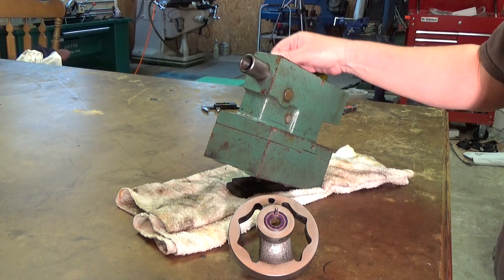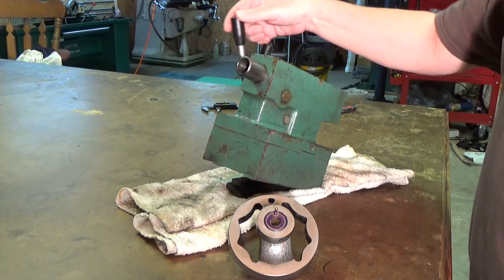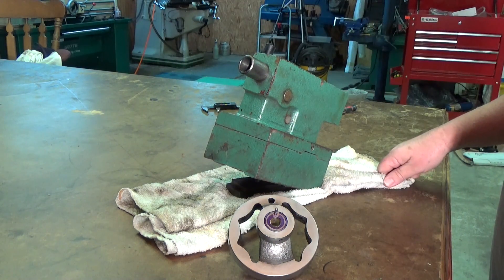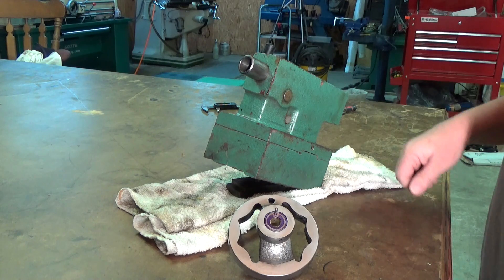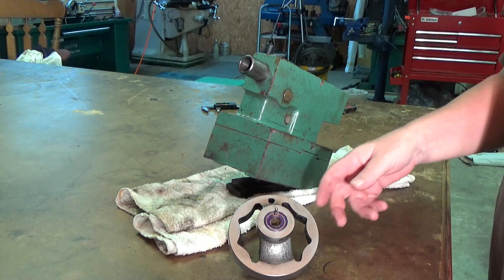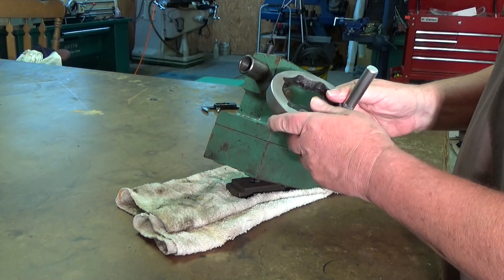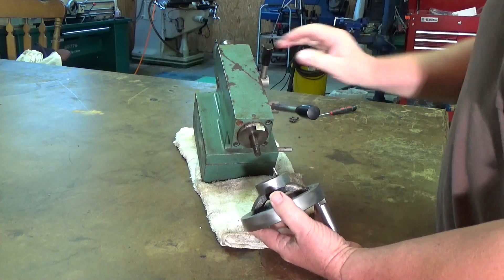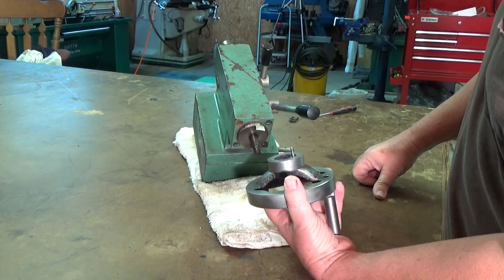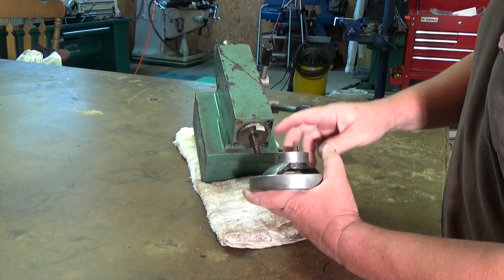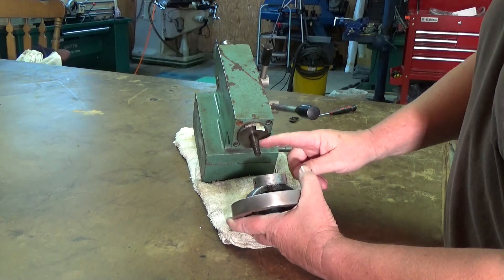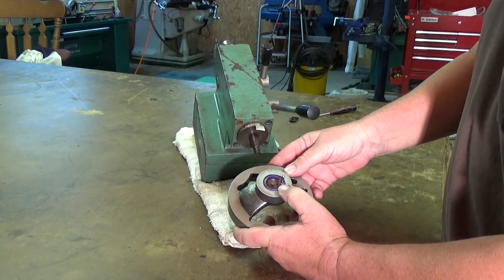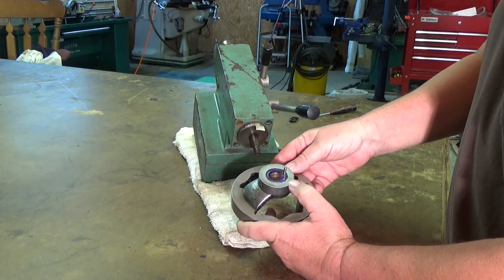Some time ago I rescued this tail stock out of the local scrap yard, got a couple other pieces of that lathe as well. When I got this Bridgeport clone, I needed a fine feed hand wheel. Luckily this actually had one, but somebody had already worked on this thing and drilled it way out. The bore on that Bridgeport clone is a half inch.